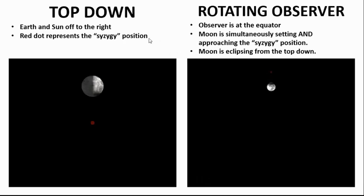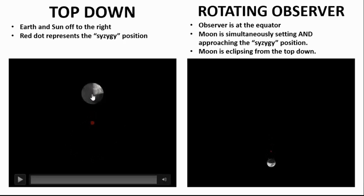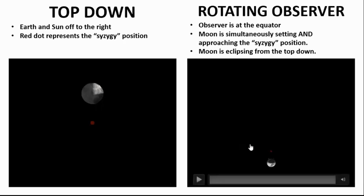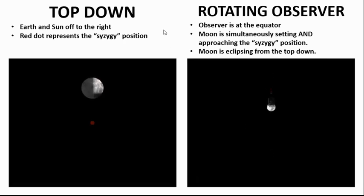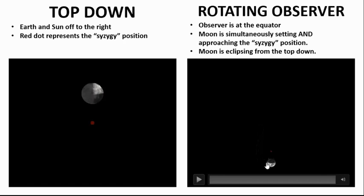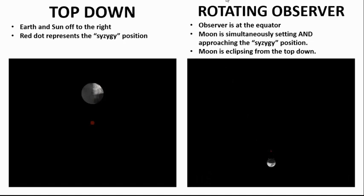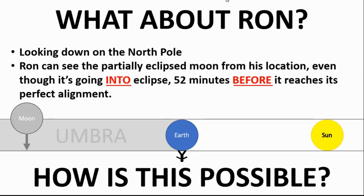Let's have a look what it looks like. You'll see from this top down view the moon moving from the top of the screen to the bottom of the screen slowly eclipsing half the moon, whereas on the right you will see the moon setting from that observer's perspective simultaneously moving towards the red dot, the perfect alignment three body alignment position. This on the right is modeling what Ron would see, an eclipsing moon moving towards the peak position but also eclipsing from the top down. Hopefully that makes sense now to all the flat earthers.